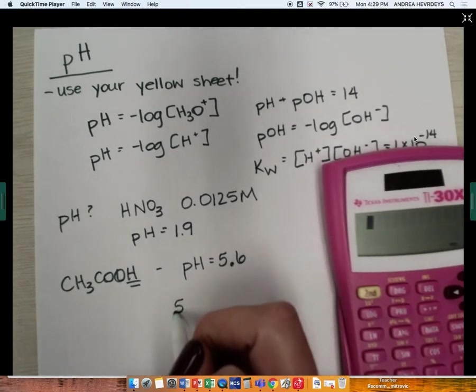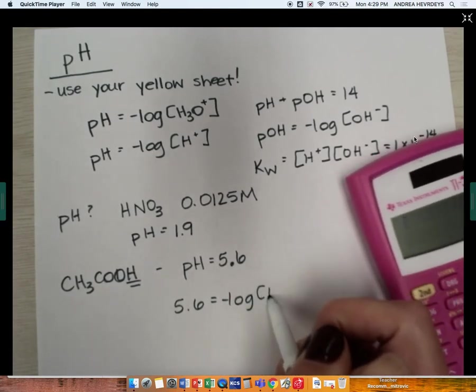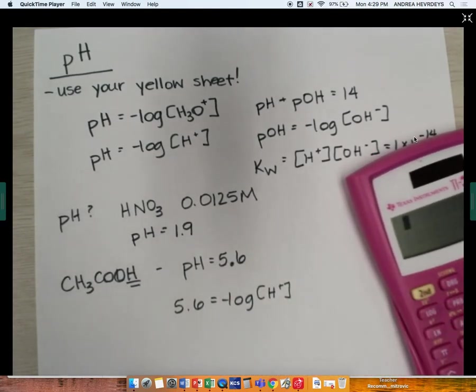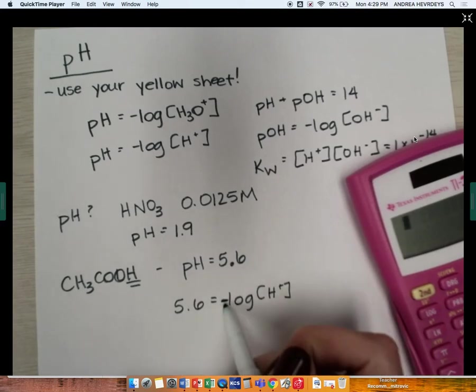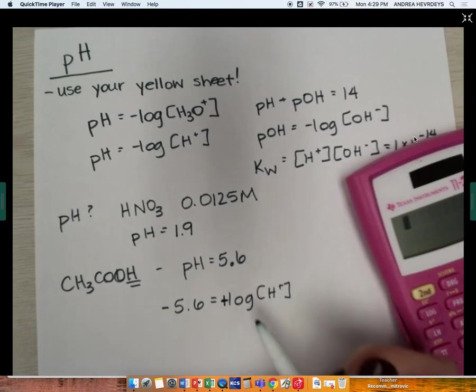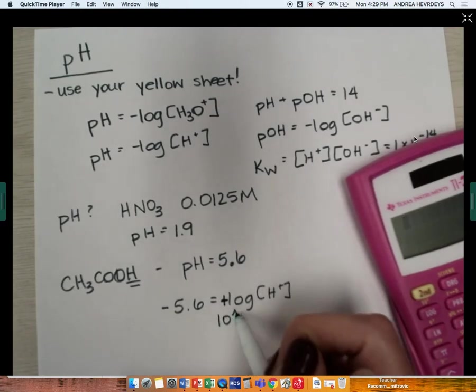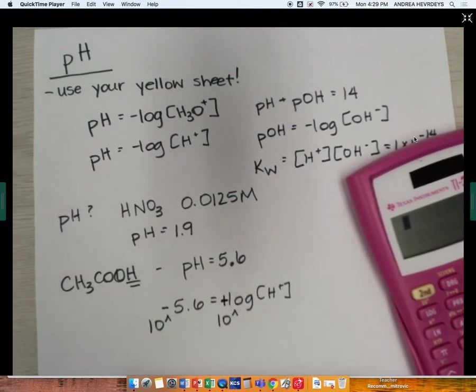So if I know that the pH is 5.6, and that equals the negative log of my hydrogen ion concentration, the first thing I have to do is get rid of that negative sign. So the way you get rid of a negative sign is you flip it to the other side. Multiply by negative 1 on both sides, whatever in your brain helps you.